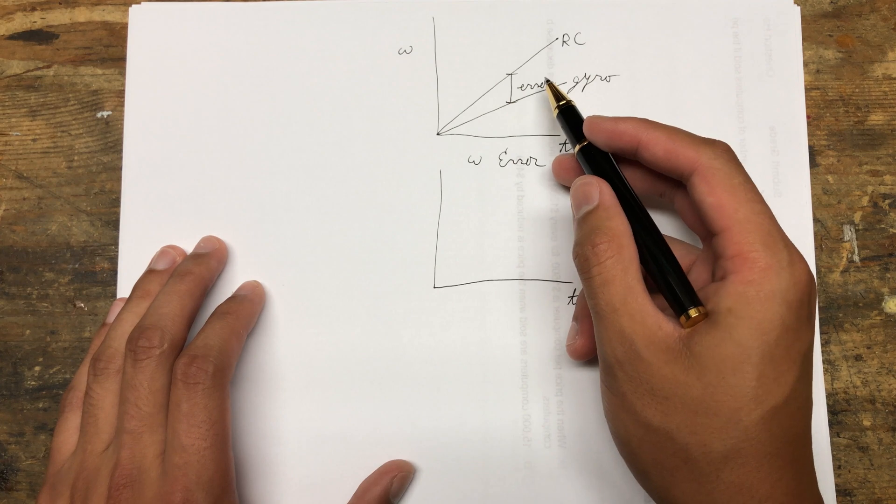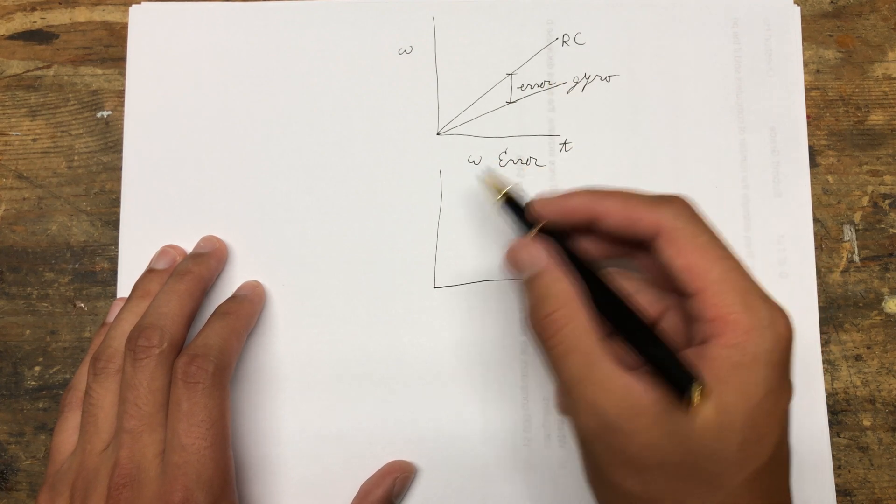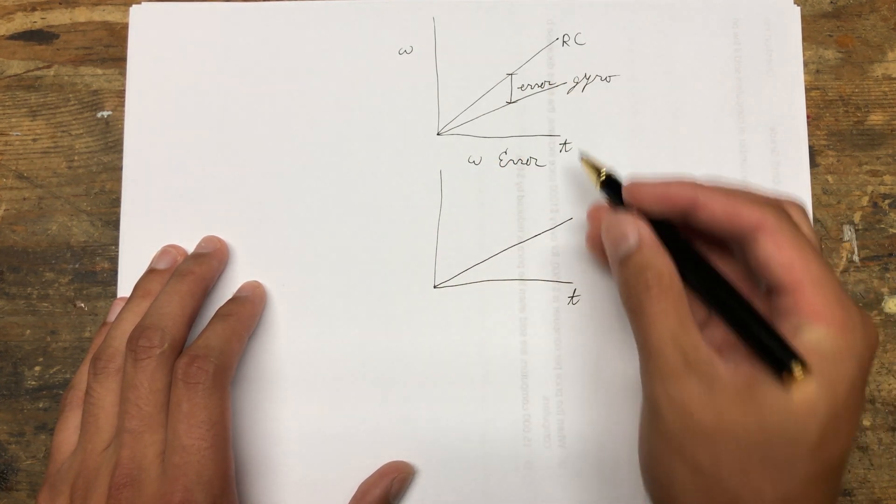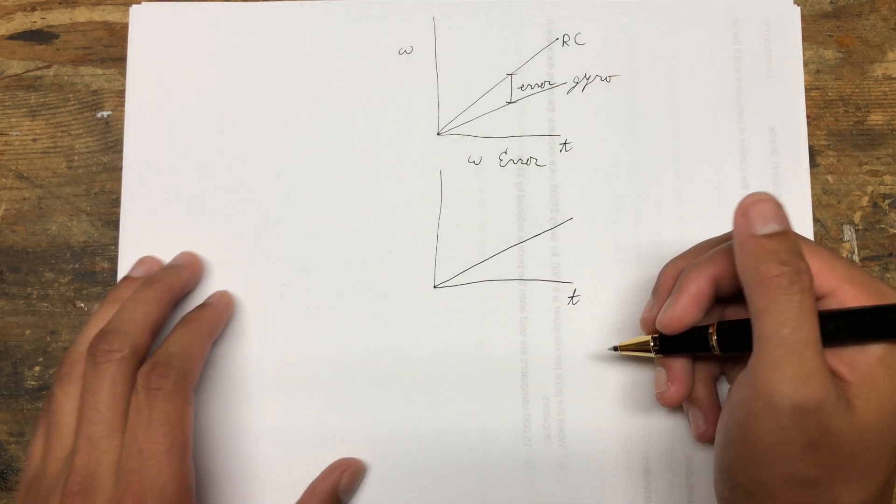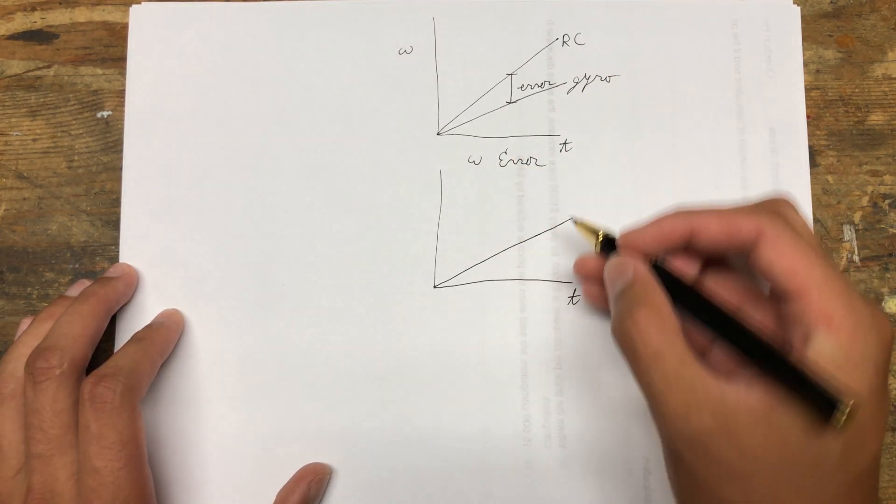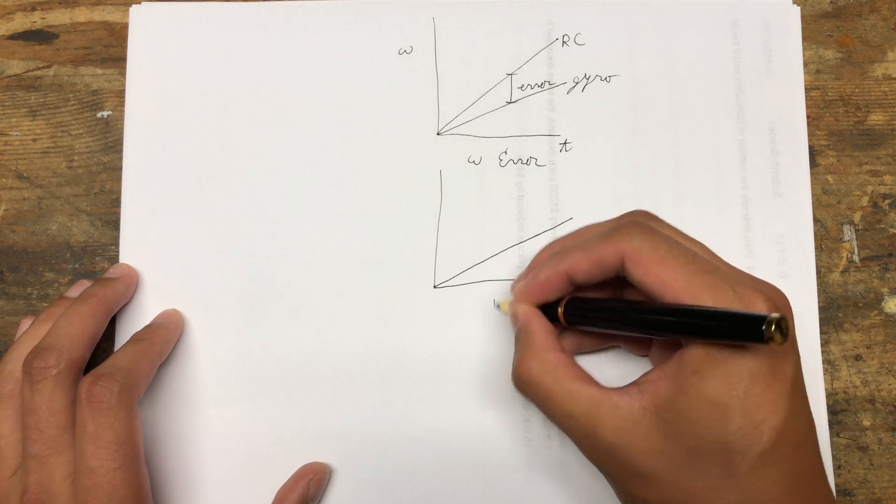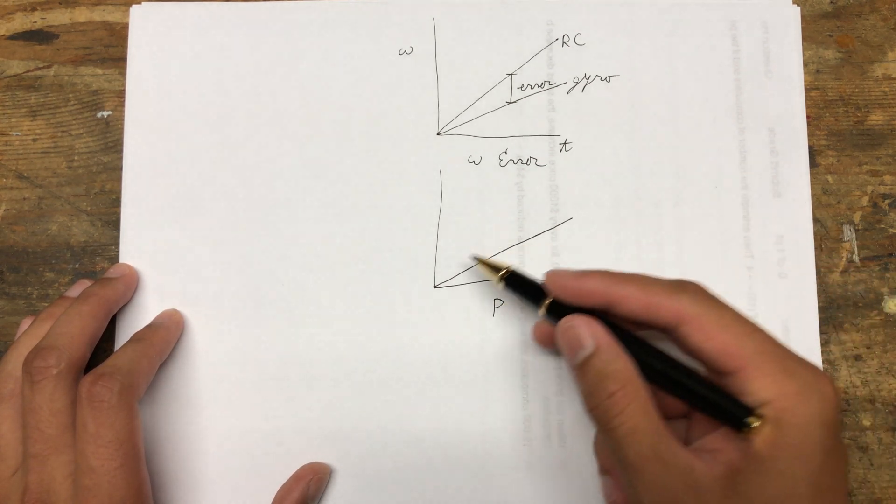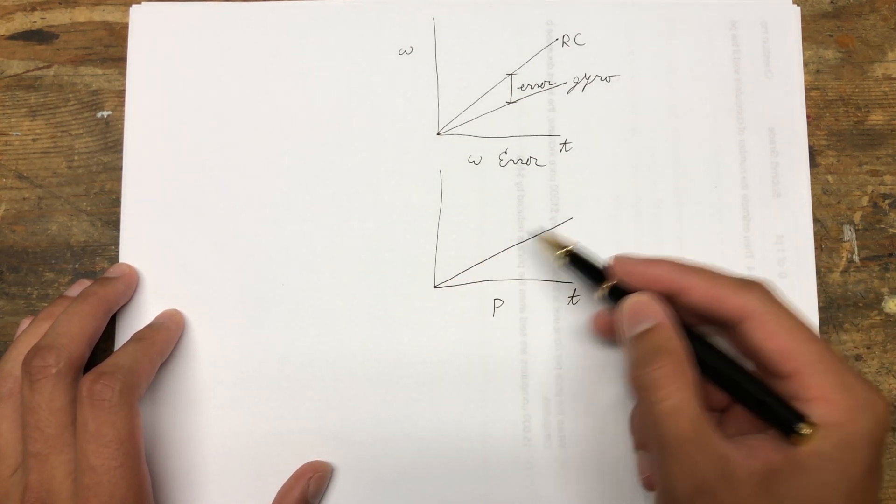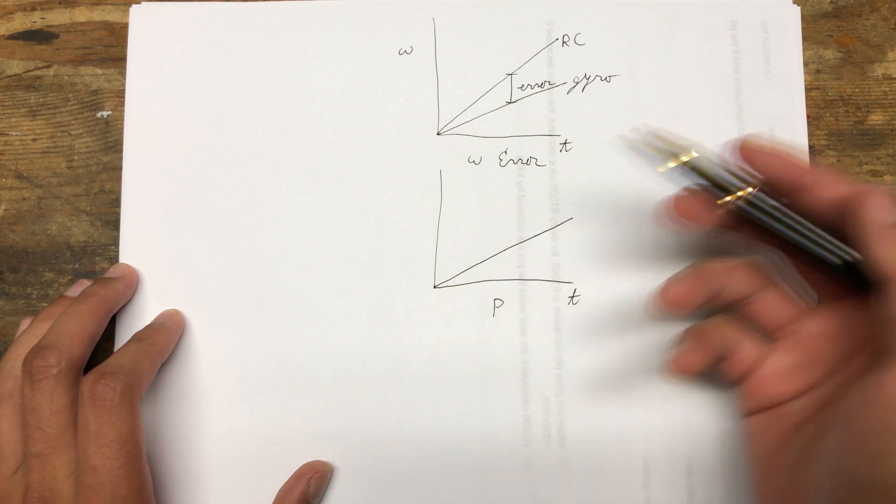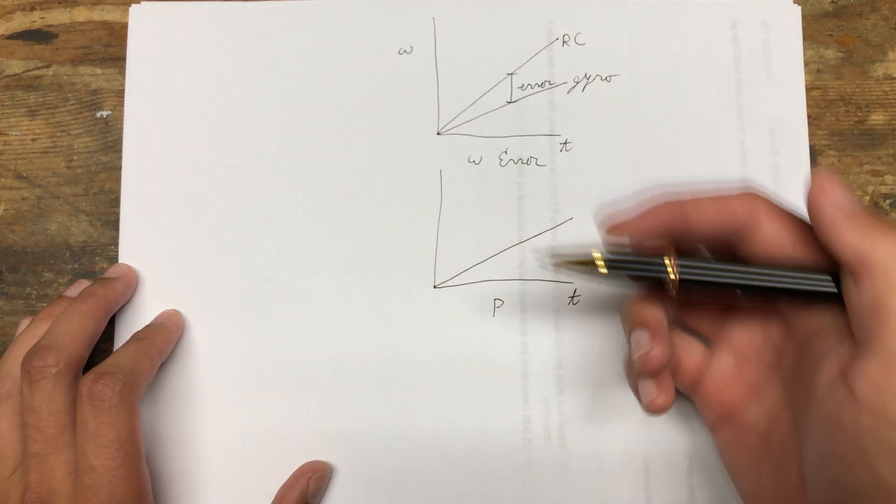The next graph here is just the error in the rate of rotation, and this is actually what the P-term responds to. The P-term basically multiplies this amount of error by some value, and then that gets mixed into your motor outputs.